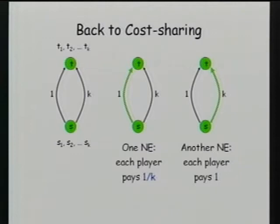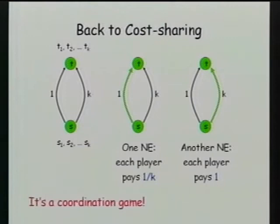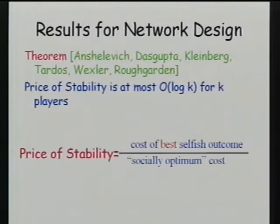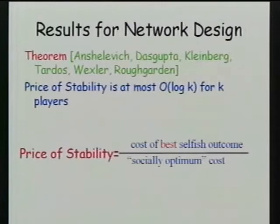What the theorem says is that the equilibrium minimizing the potential function has cost at most a log-k factor above the optimal for k users. We decided to name this the price of stability — instead of taking the worst possible equilibrium, we take the best possible equilibrium. The question is: do we care about the best equilibrium?